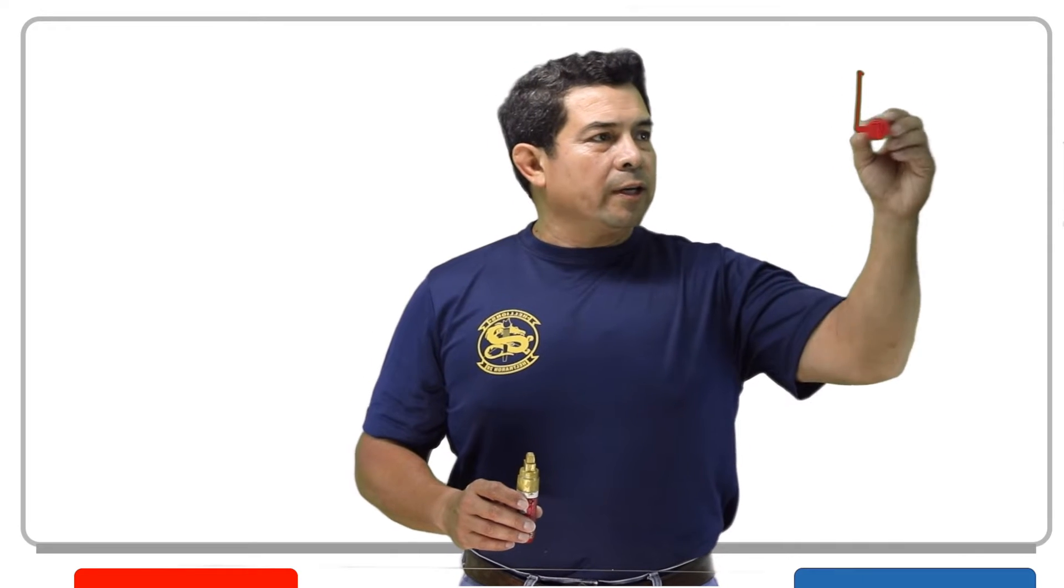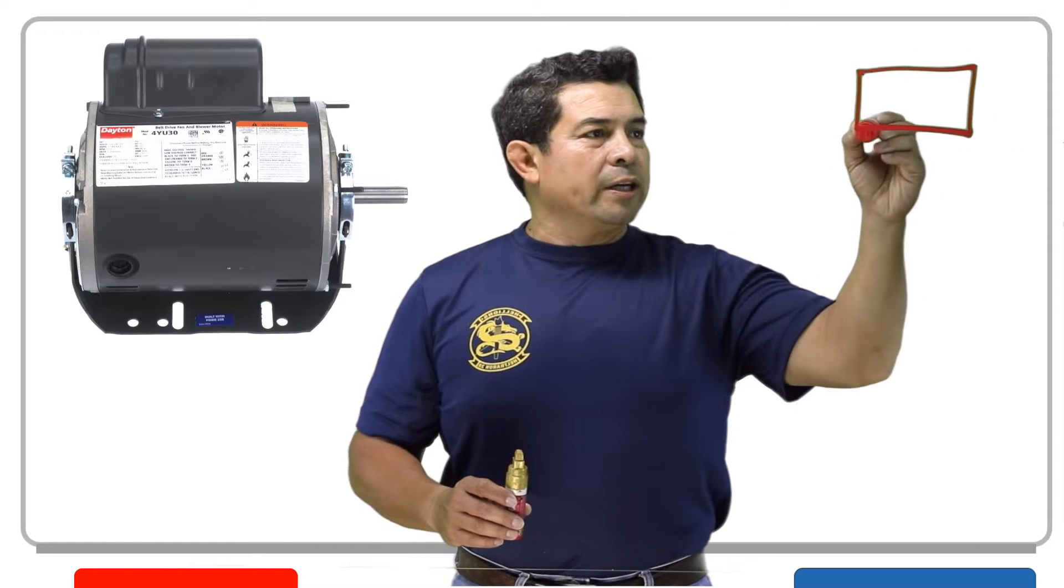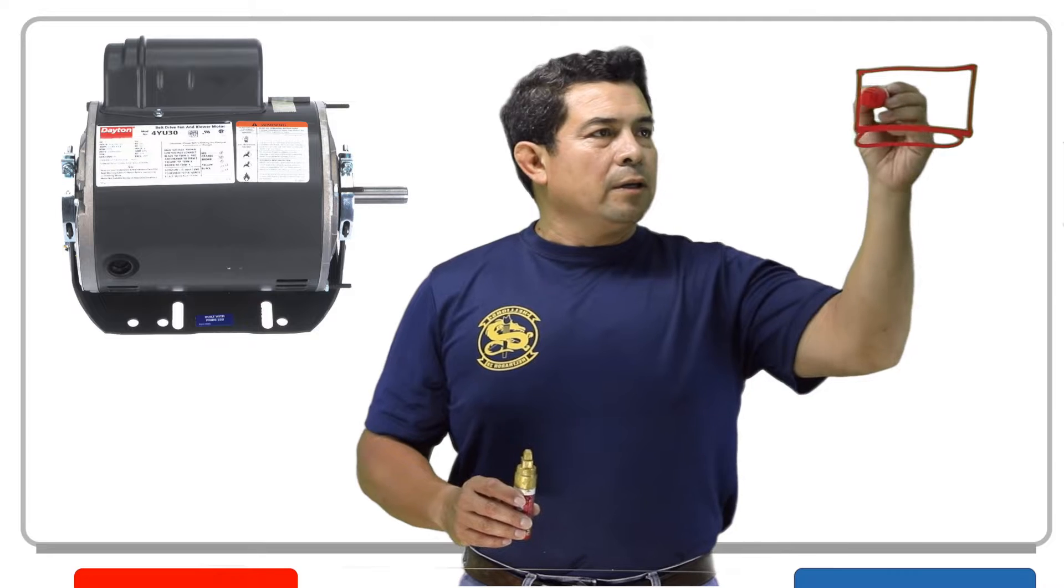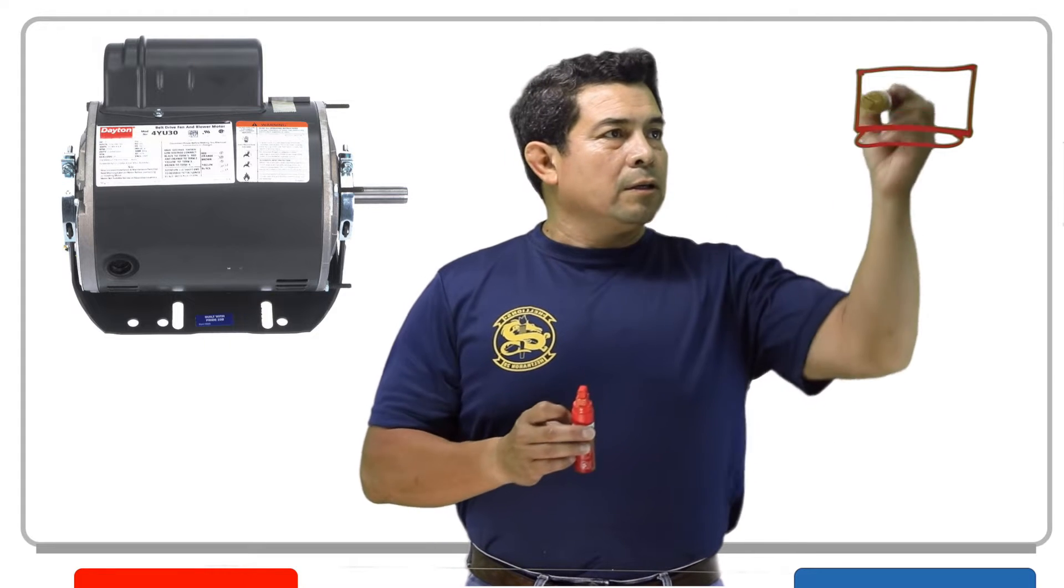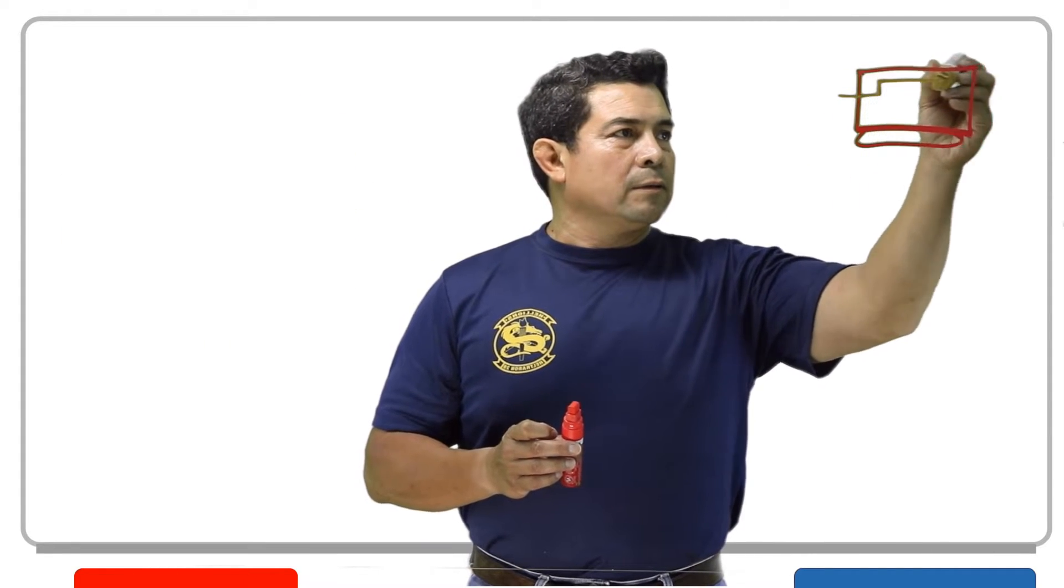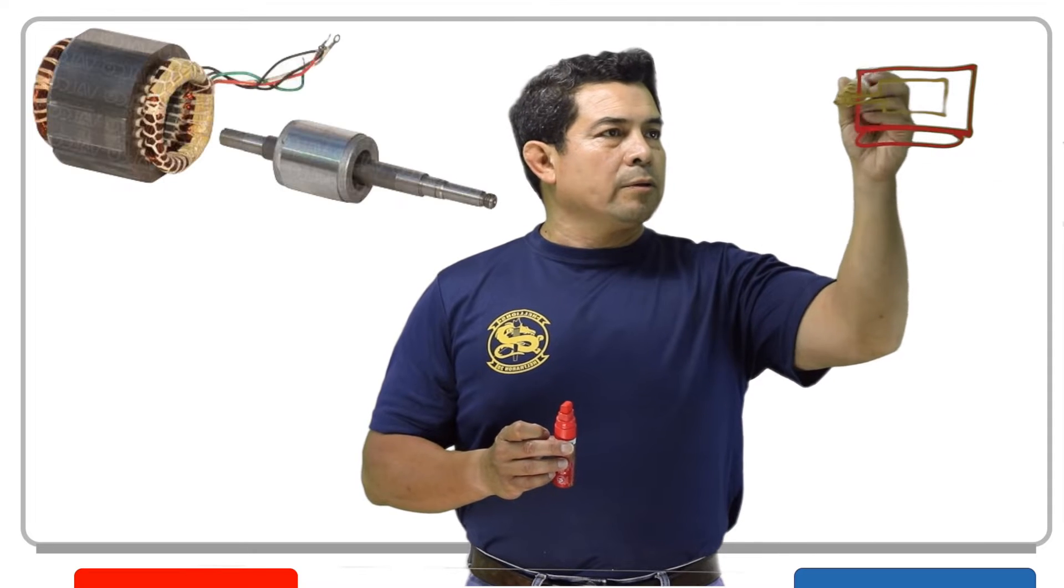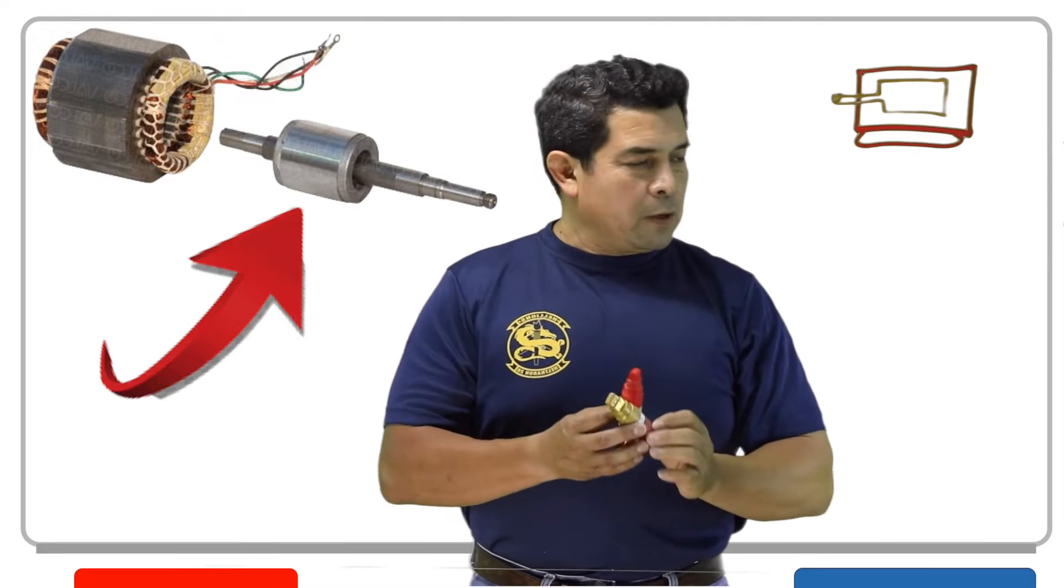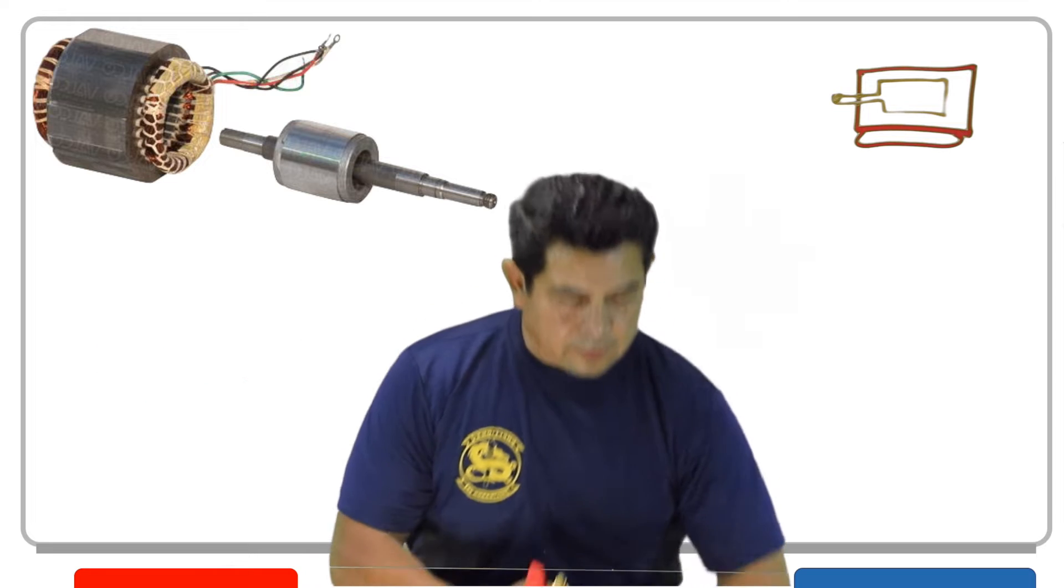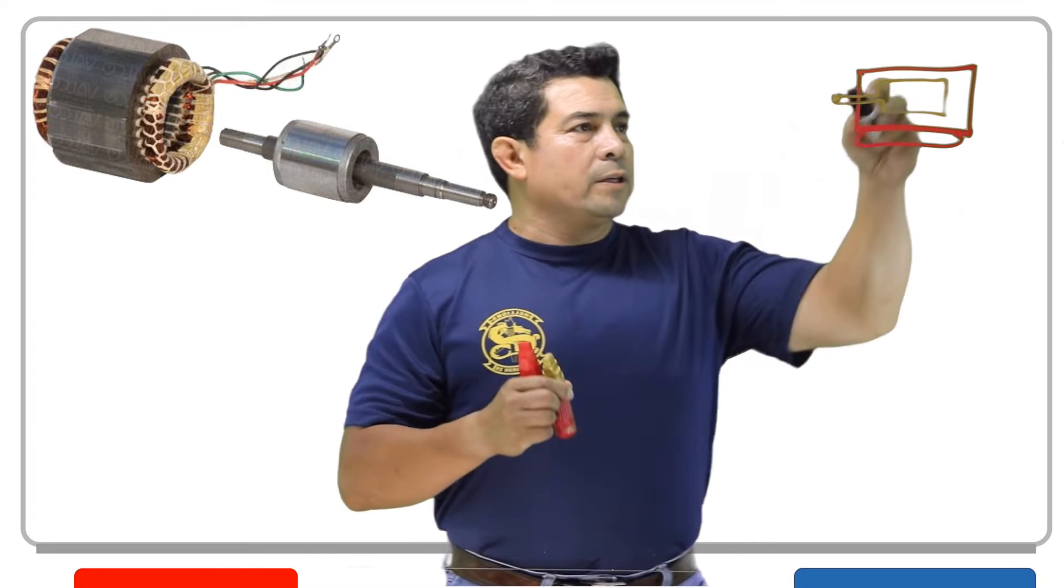Inside of a motor, you're going to have, first of all, the casing like this. Inside of it, you're going to have the rotor, the part that rotates right there. We're also going to have the windings.